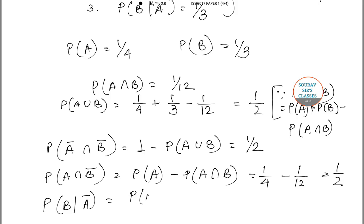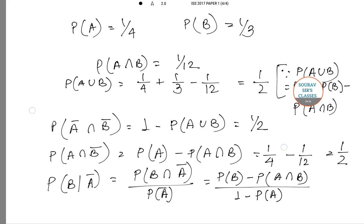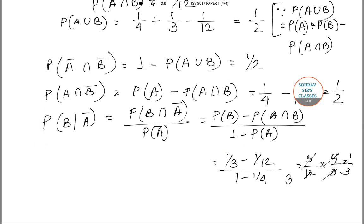Probability of B given A bar equals probability of B intersection A bar divided by probability of A bar. That gives us probability of B minus probability of A intersection B, divided by one minus probability of A. This equals one by three minus one by twelve, divided by one minus one by four, which is three by twelve times four by three, making it one by three. So the correct option is B — statements two and three are correct.